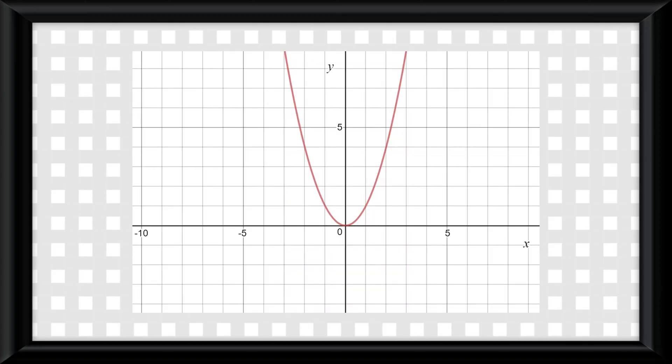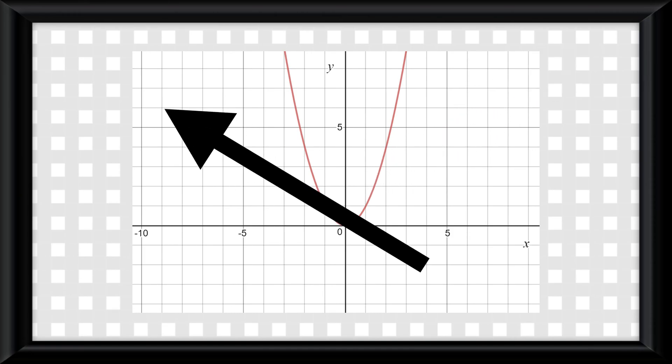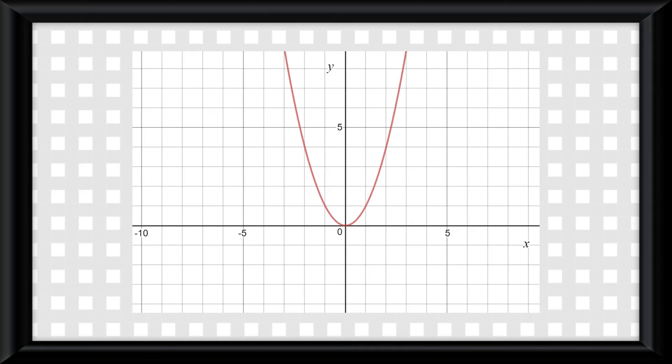The notation we use for this is called limit notation. Let's start with this graph. First we need to see where x ends. You see on the right x increases without bound, and on the left x decreases without bound. This means x will be going to positive and negative infinity. We write that in limit notation like so.